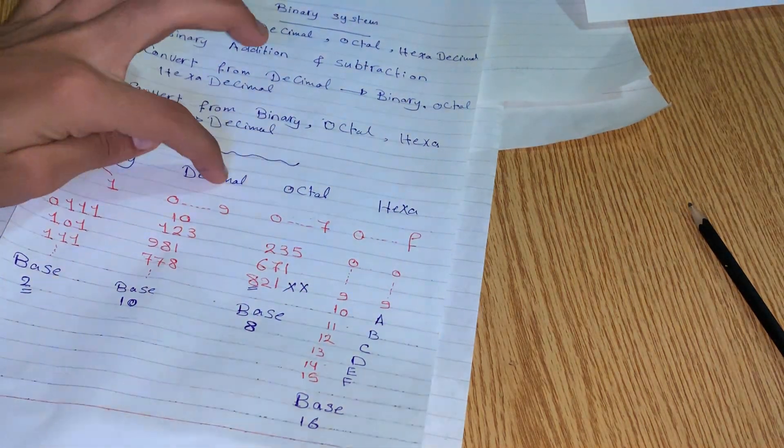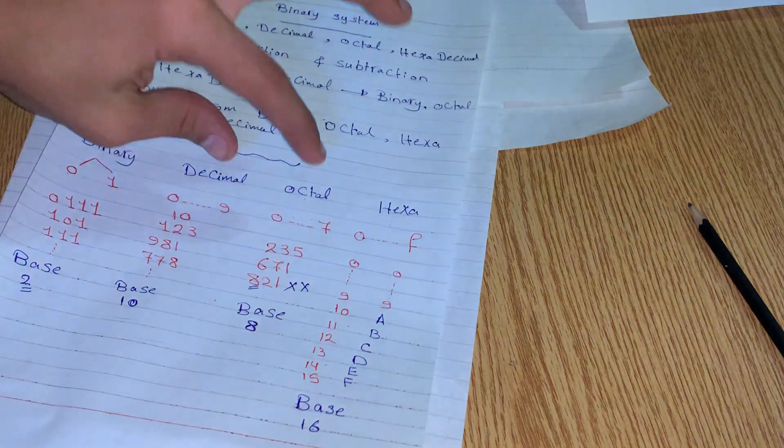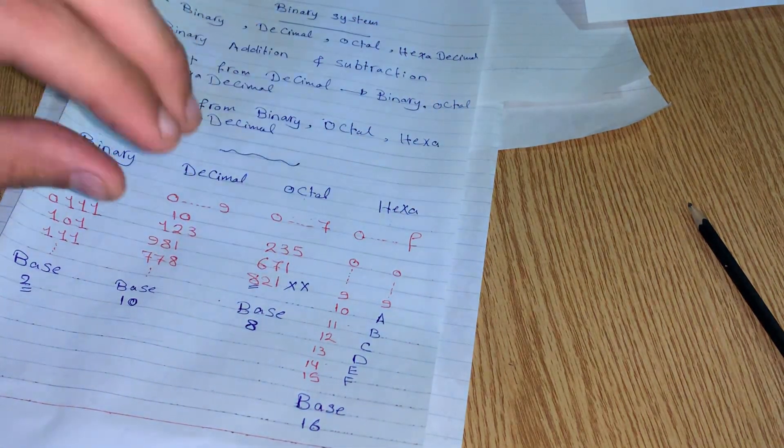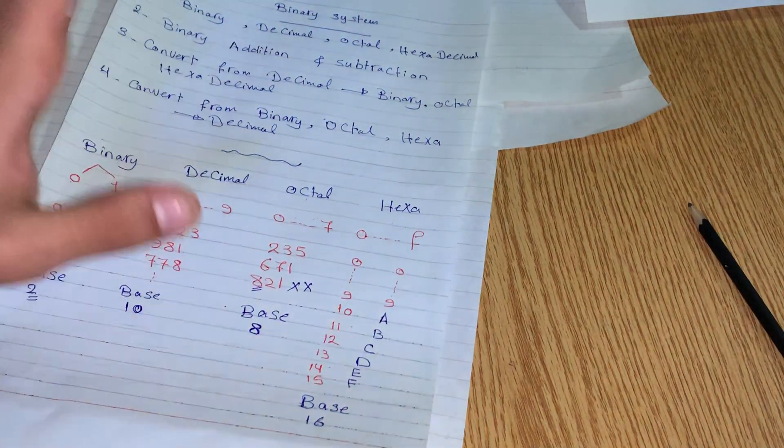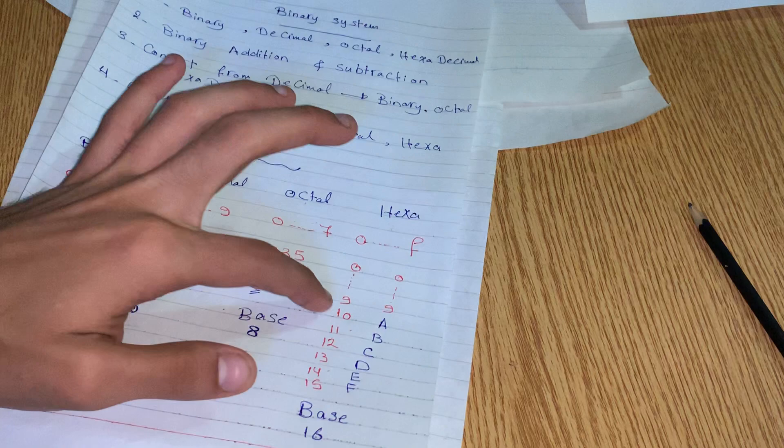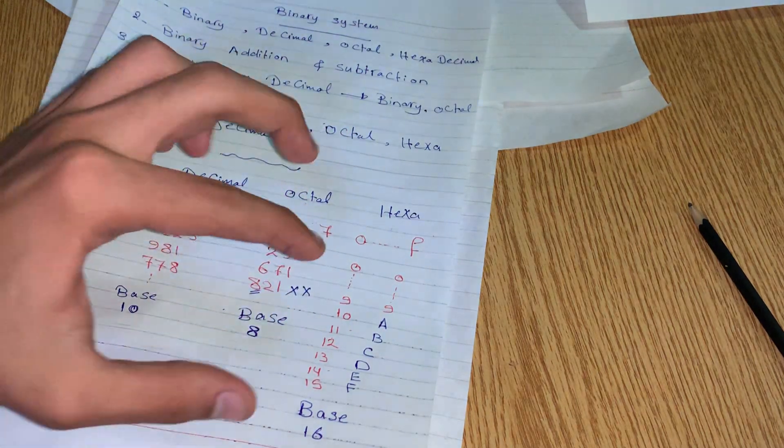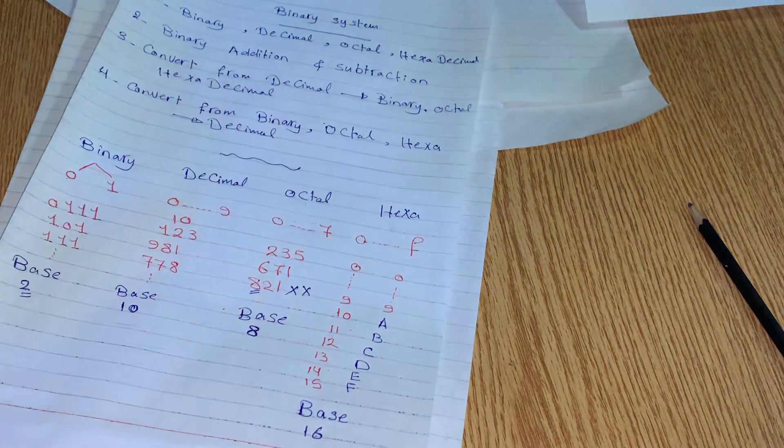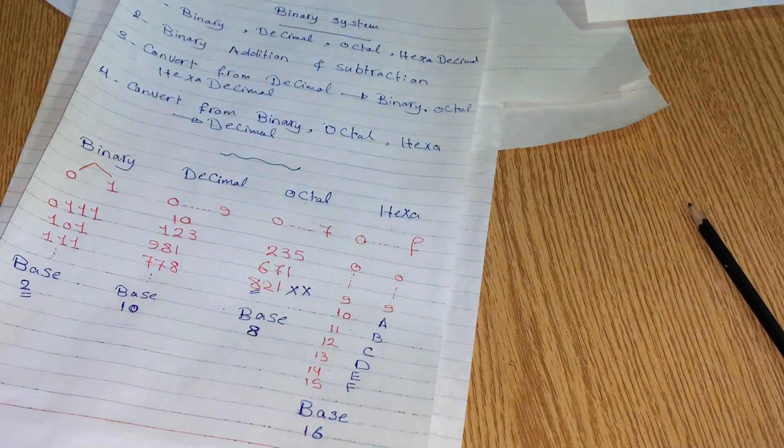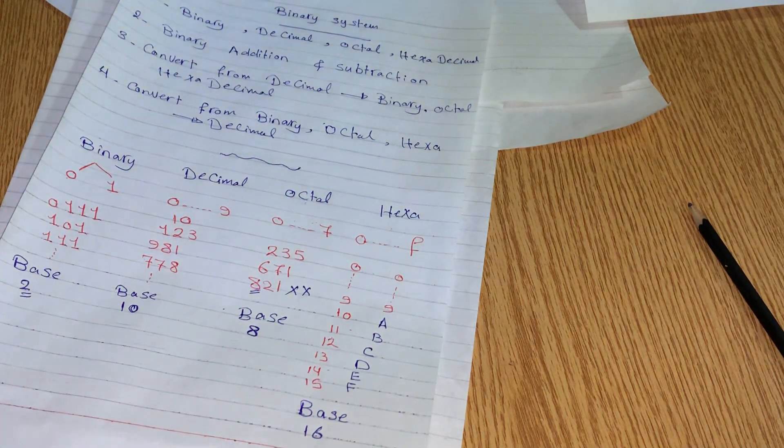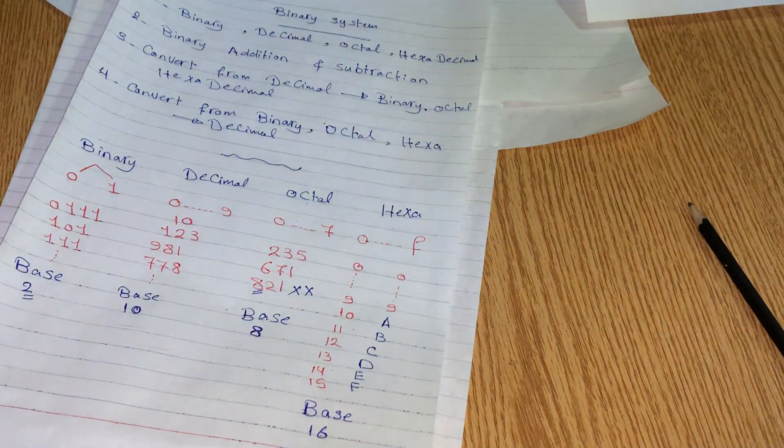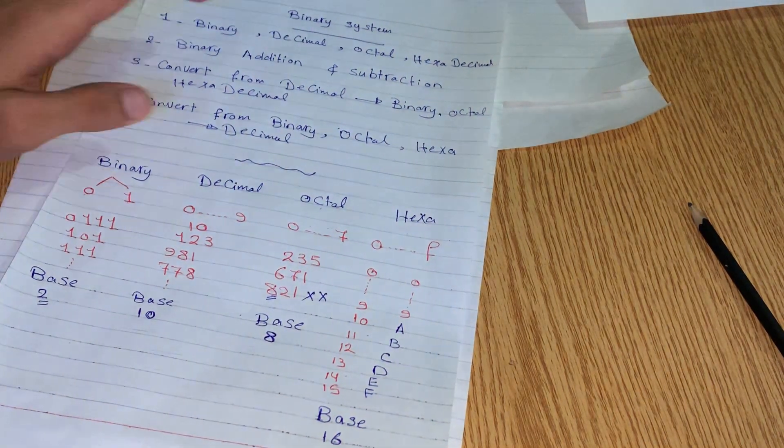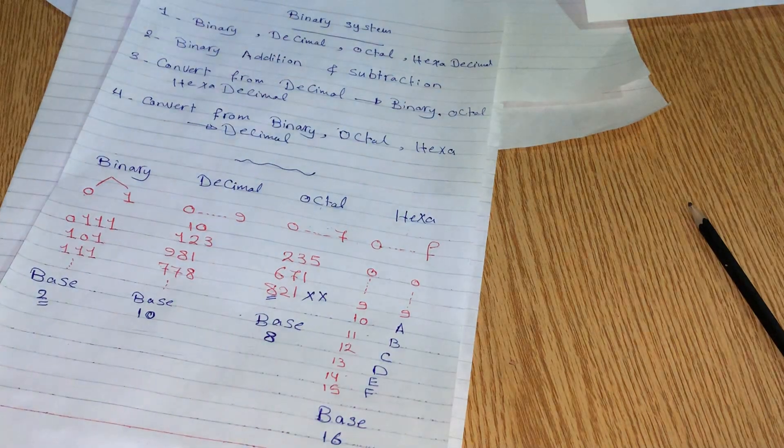We need to know all of them. In the hexadecimal we will have ten or twelve or fifteen. That is the first video. We will know what is necessary. In the next video, we will talk about addition and subtraction of binary.